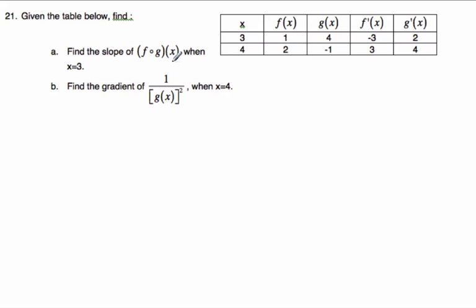Okay, so I'm asked to find the slope of the composition of f and g when x is 3, and I'm only given this table of values. And so I have to realize that the slope means derivative.